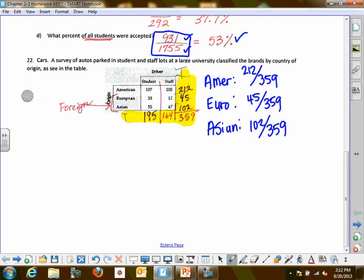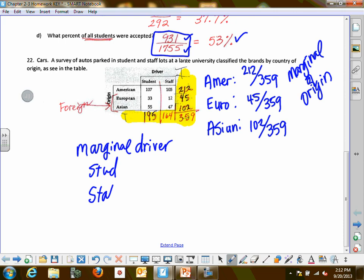If they said marginal by driver, then that's when you would list the type of drivers like student and staff. Let's look at those numbers. Student would be 195 over 359, and then staff 164 over 359. So that would be if they asked marginal by driver.